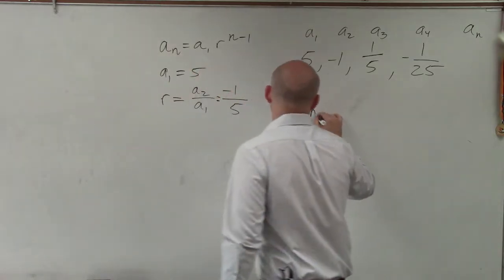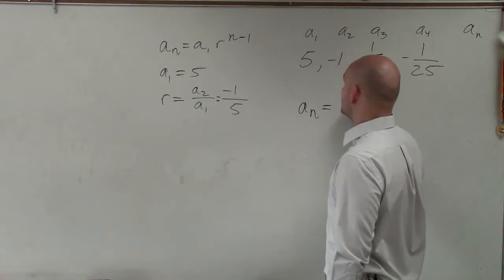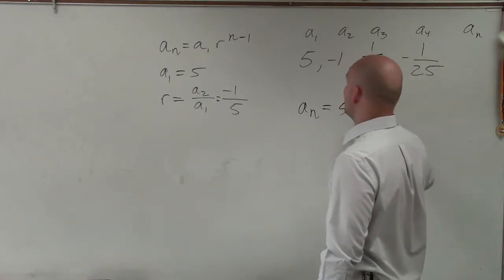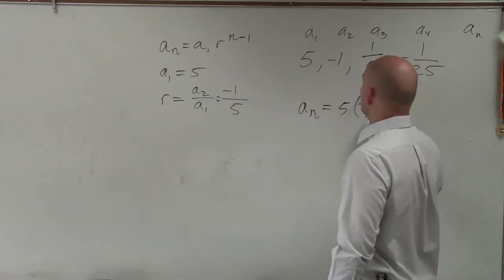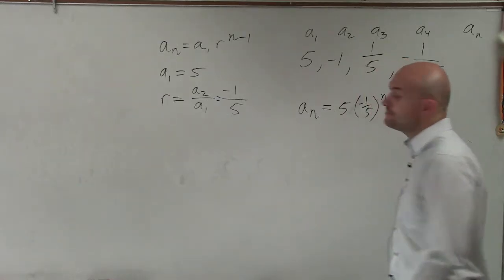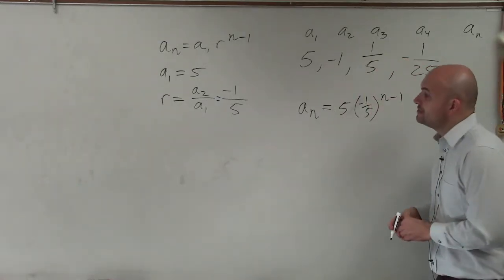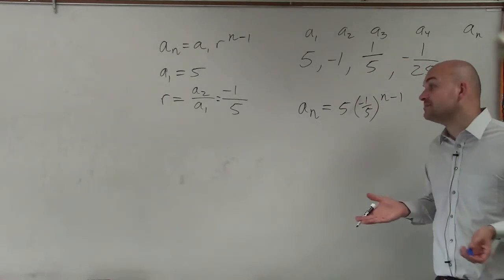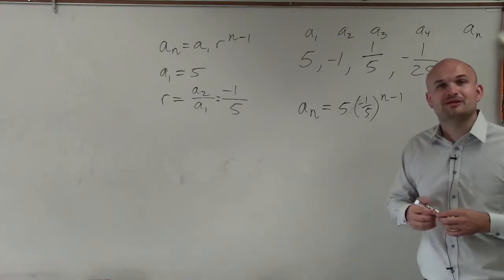Now our general rule is a sub n is equal to a sub 1, which is 5, times negative 1 fifth raised to the n minus 1. So there you go, ladies and gentlemen. That is how you find the nth rule or just a rule for your geometric sequence. Thanks.